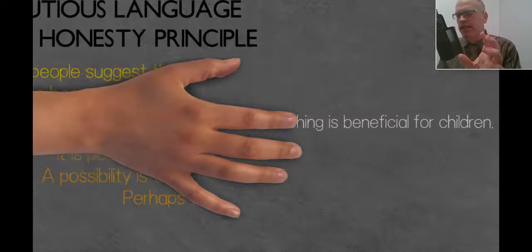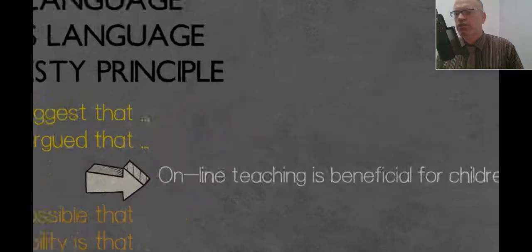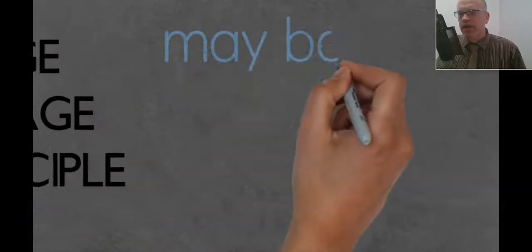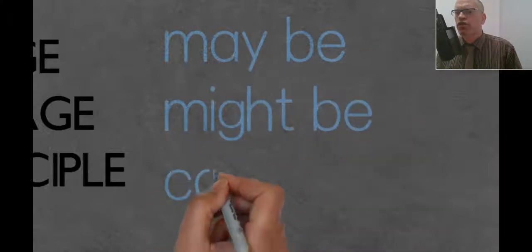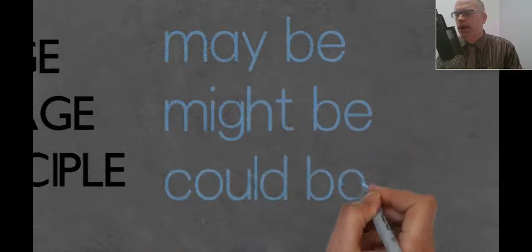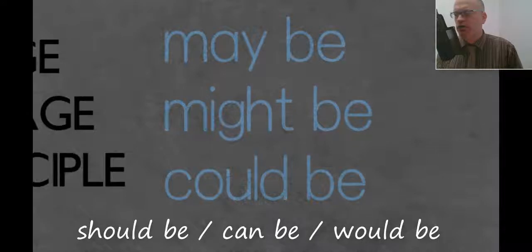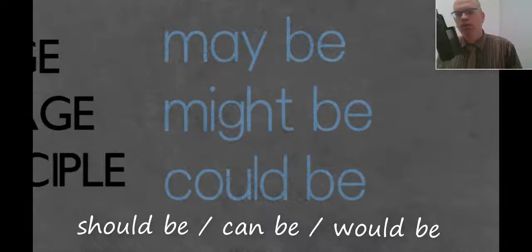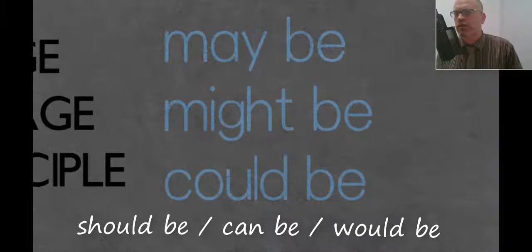In the middle of that sentence, we might want to change and use some modal verbs instead of this is. So we've got a problem here with is. This is too strong. So we might change it to may be, might be, or could be. They are the three common options. Just remember you can also use some other modal verbs. You could use should be, can be, or would be. They are also okay. I've just chosen those three because they are the most common.